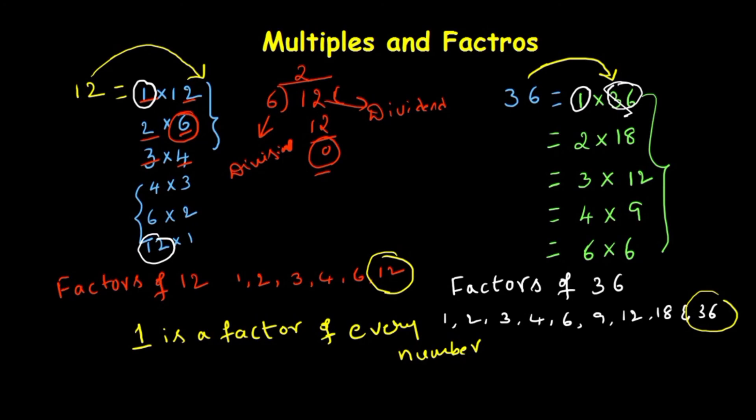Finally, what we conclude here: one is the factor of every number, and the number is a factor of itself. These two points are very important.